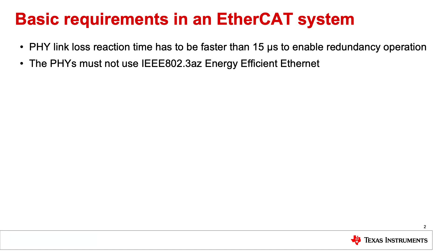A second requirement is not using energy efficient Ethernet, as it adds additional overhead on the payload. This feature is used to achieve the Energy Star label, but for industrial Ethernet it is typically disabled. For more details on these requirements, see the EtherCAT client controller application note, hardware datasheet section 1, terminology.